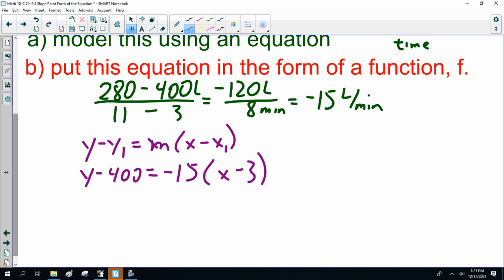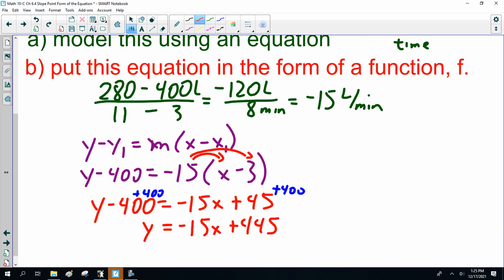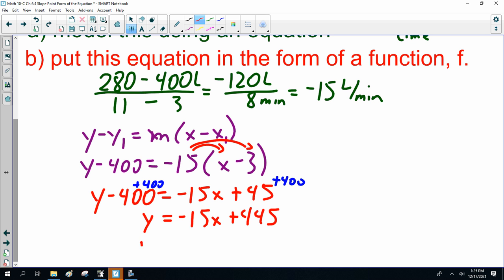Now, model using an equation. Now, rewrite this in a function. F means we have to rewrite it as y equals, or slope intercept form. So, what do we do? We multiply this out and solve for y. So, this is y minus 400, minus 15x plus 45. I add 400 to both sides. So, it is y equals minus 15x plus 445. Now, put that in function notation. F of x equals minus 15x plus 445. That's easy to graph on your graphing calculator.